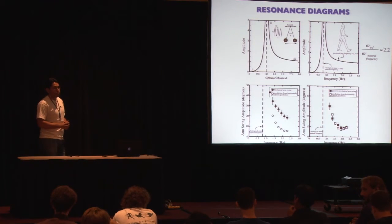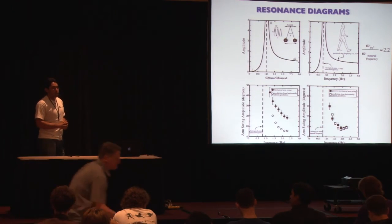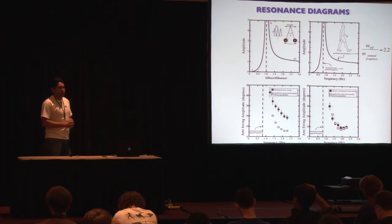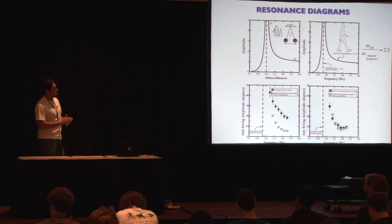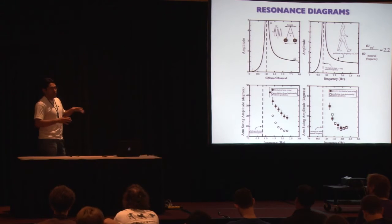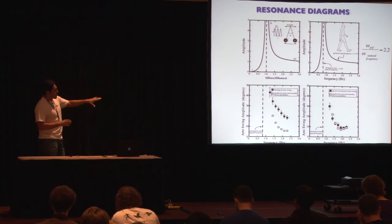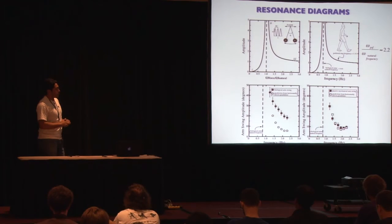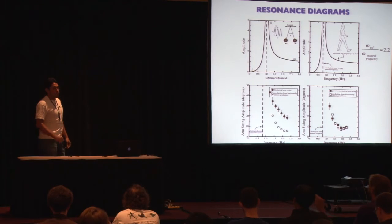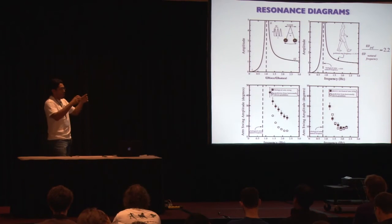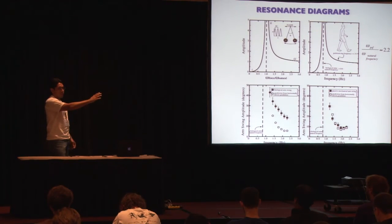An audience member asked whether the pendulum model should incorporate a three-dimensional input to the shoulder, including up-and-down vibration. The presenter acknowledged this is a simple approach that did not include transverse rotations or vertical oscillations, but noted that these would definitely play a role. Despite its simplicity, the model makes reasonably good predictions based on just the horizontal forcing of the arm, using only sagittal plane kinematics from the marker data.